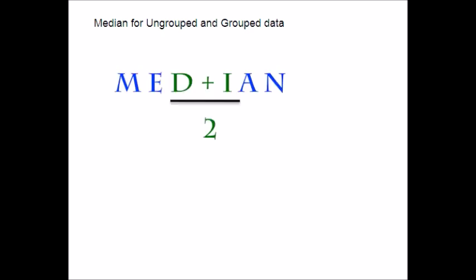What is median? Median is the most middle value in the arrayed data. When the data are arranged in either ascending or descending order, the median is the middle value if the number of values is odd, and the mean of the two middle values if the number of values is even. A value which divides the arrayed set of data into two equal parts is called the median. The values greater than the median are equal to the values smaller than the median.